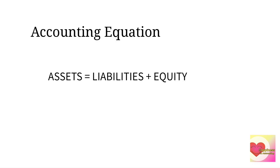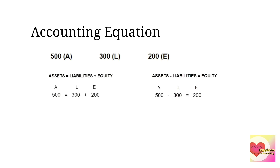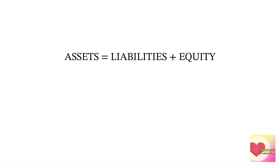For the accounting equation we have: Assets = Liabilities + Equity. For example, the value of our assets is 500, our liabilities is 300, and the equity is 200. When we use these values in different forms of the equation, the values are still the same and the equation remains correct.